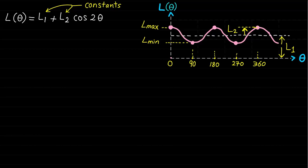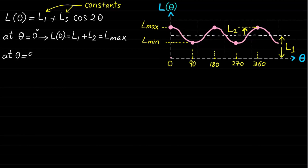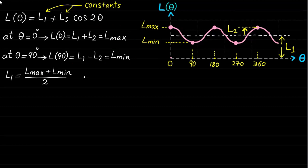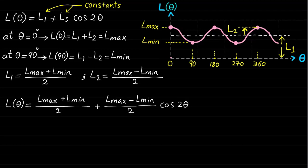To find the constants L1 and L2, we develop two equations at two different angles. By solving these two equations, L1 equals (Lmax + Lmin)/2, and L2 equals (Lmax − Lmin)/2. Therefore, the inductance variation with respect to rotor position can be represented as shown.